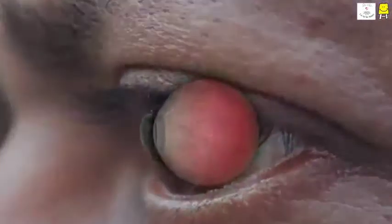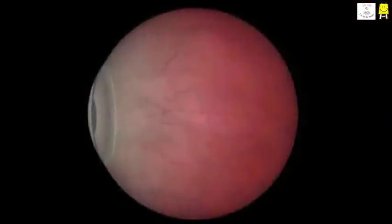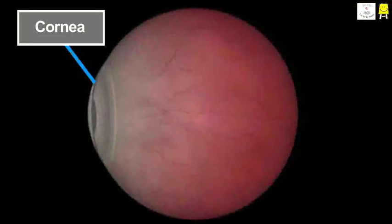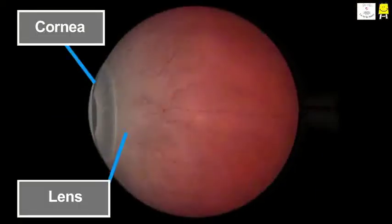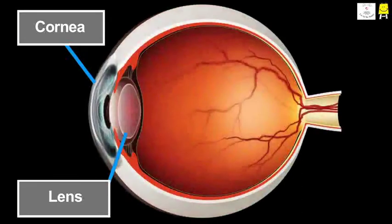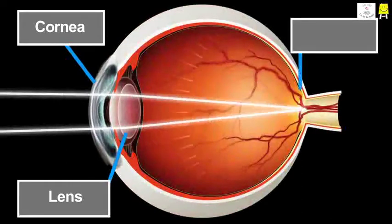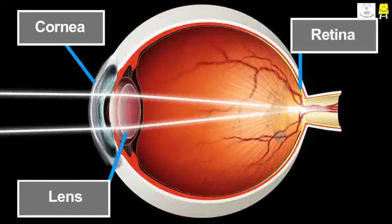You may wonder how this happens. When light falls on an object, some of the light gets reflected and enters our eyes. The reflected light rays enter our eyes through the transparent cornea and pass through the convex lens behind the cornea inside the eye. An image of the object then forms on the retina of our eyes.